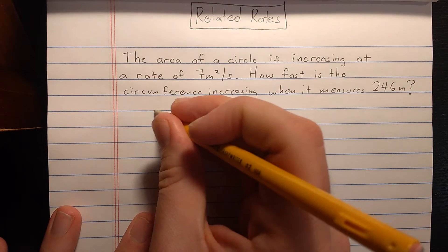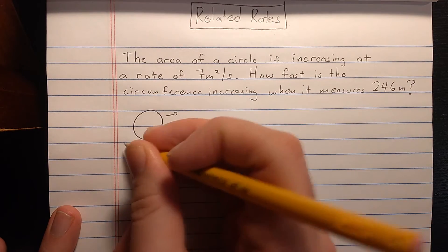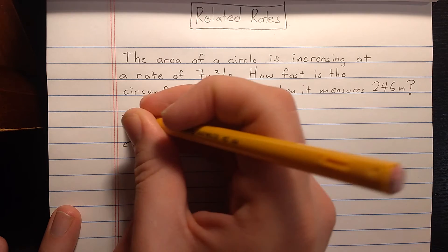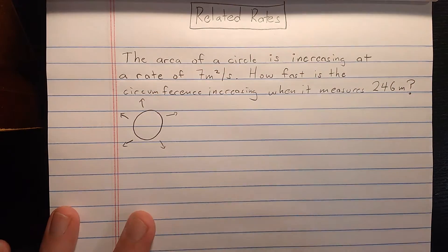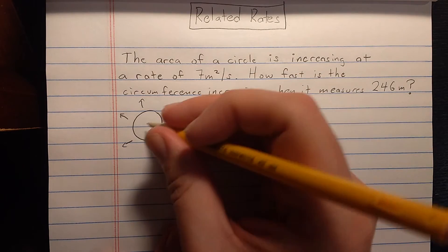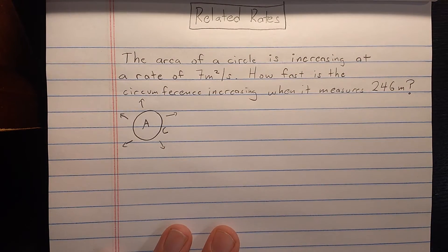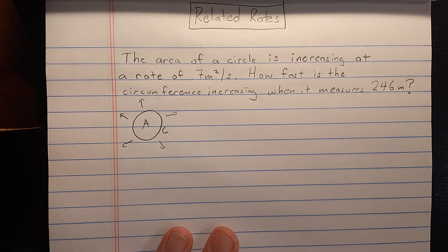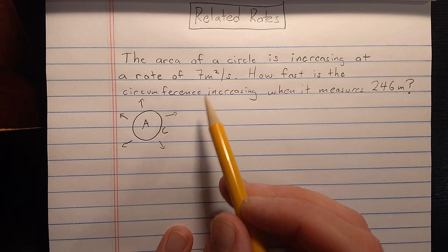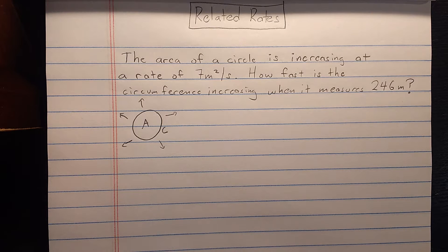Let's draw a little diagram. We have a circle which is increasing — maybe it's an oil slick or something else that is circular but increasing. It has an area and a circumference, and both of these seem to be increasing. But we know they can't increase at the same rate — they shouldn't even have the same units. The rate of change of the area is 7 meters squared per second; the rate of change of the circumference should probably be meters per second.